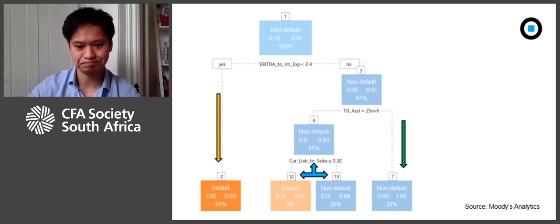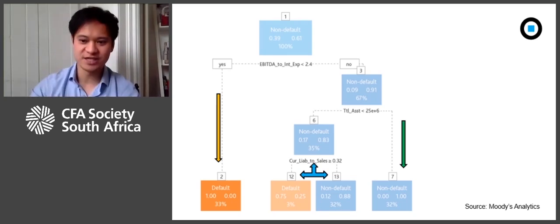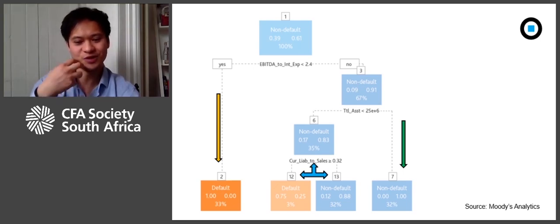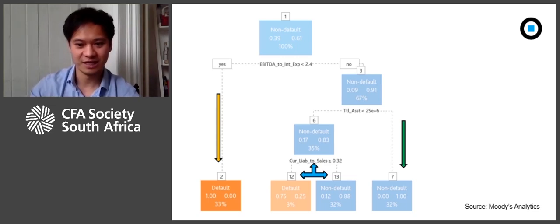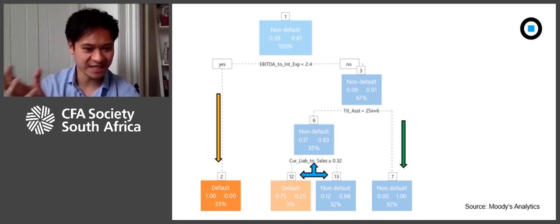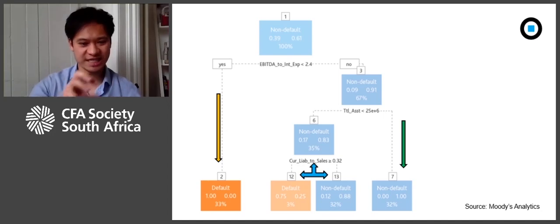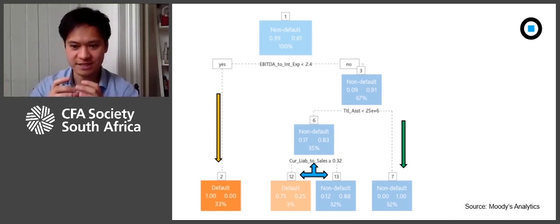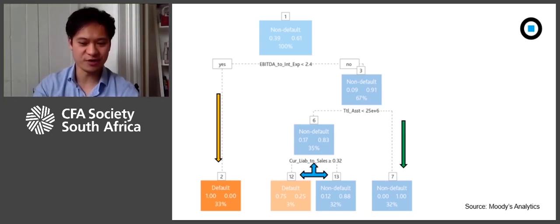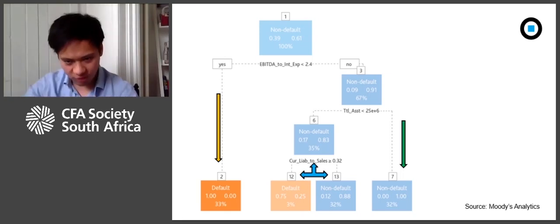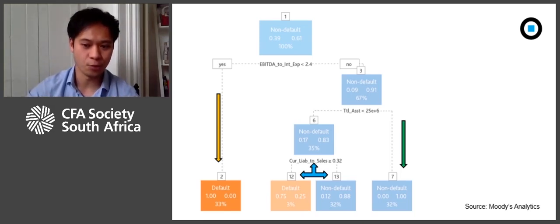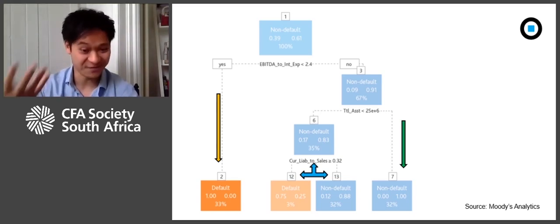Finally, the remaining data is split on current liabilities to sales — those with above 0.32 on this ratio are predicted to default, and those below 0.32 are predicted not to default. All of the data ends up split into four groups, and companies in the orange groups are predicted to default. In practice, individual decision trees tend to be very over-fit because they split data so specifically based on the training sample. What a random forest does is average across many decision trees using a process called bootstrap aggregation, or bagging. Each single tree is only shown a random subset of all of the data. The errors in each tree diversify each other away when you average the prediction across all of them — it's utilizing the power of diversification, which most investors should know well.